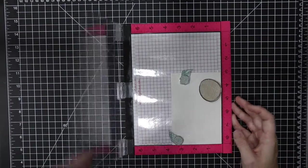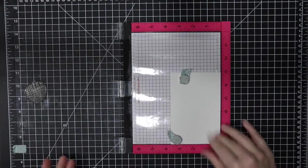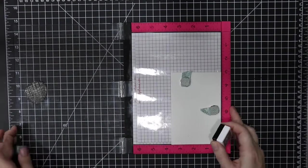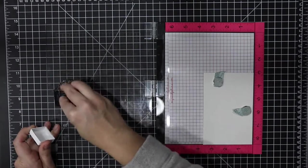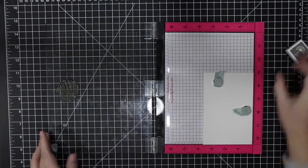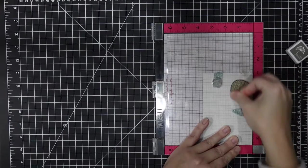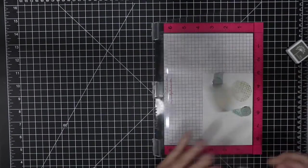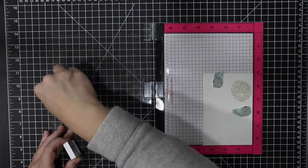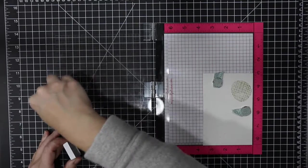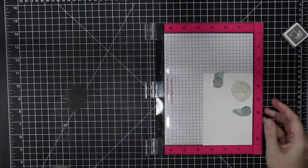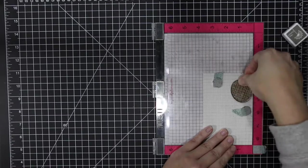I'm using my Misti to arrange the background panel on my card. I'm going to have some elements in the background and some things are going to be popped up with foam tape. I'm using Wet Cement by Hero Arts to stamp this multiple times.